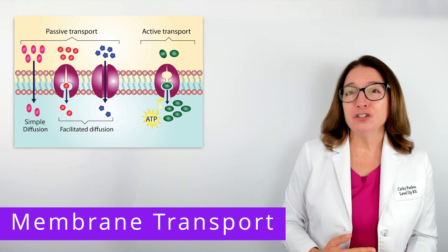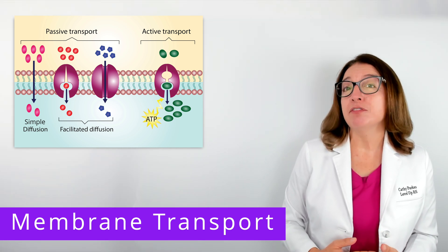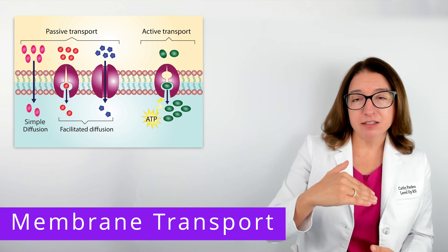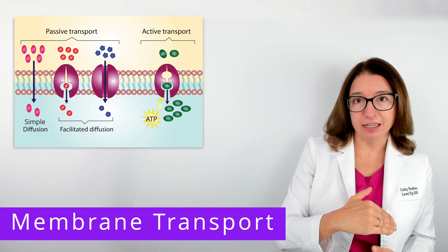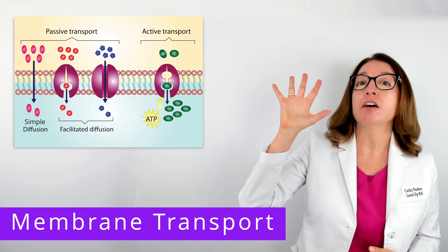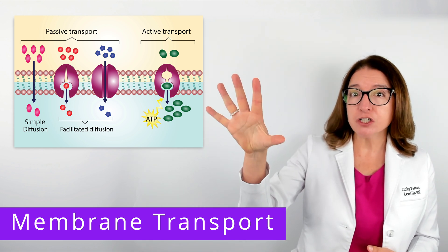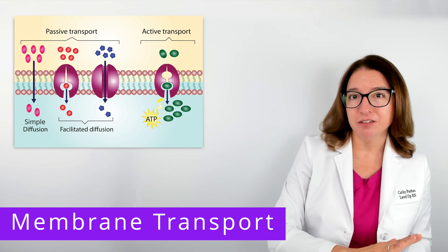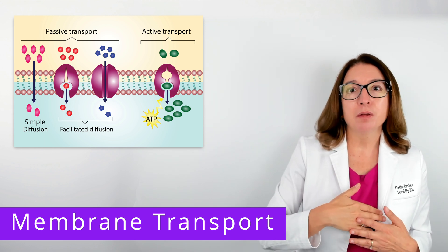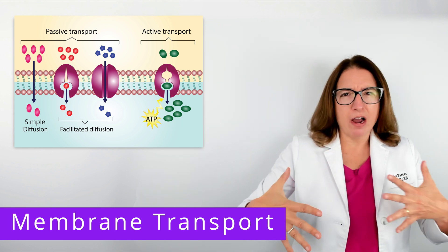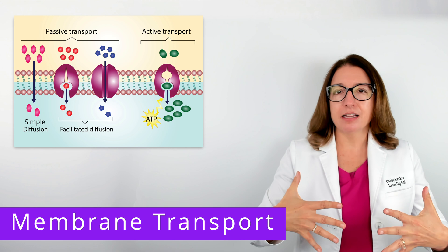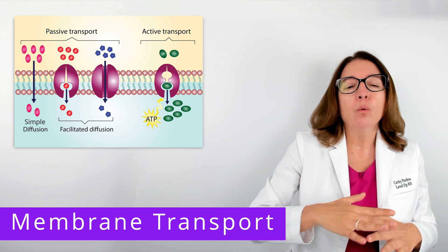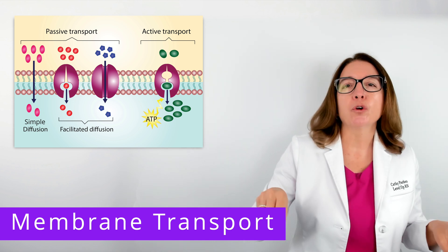Simple diffusion is where we have the movement of molecules down a concentration gradient, so we are going from an area of high concentration to an area of low concentration. The molecules are like, it's too crowded here on this side of the membrane, so I'm going to cross the membrane where there's more room.